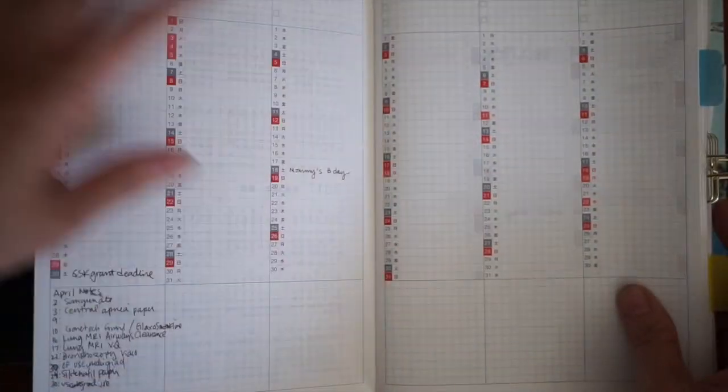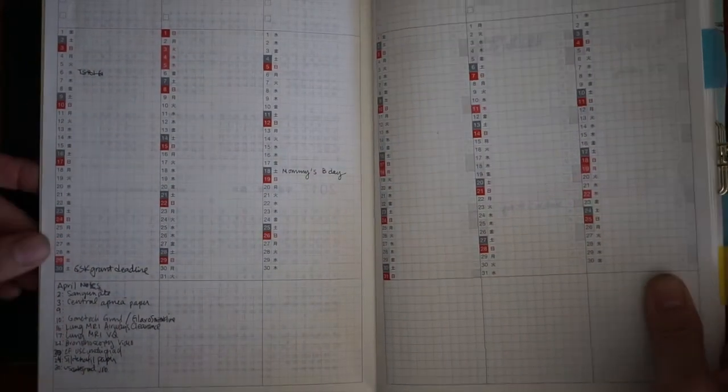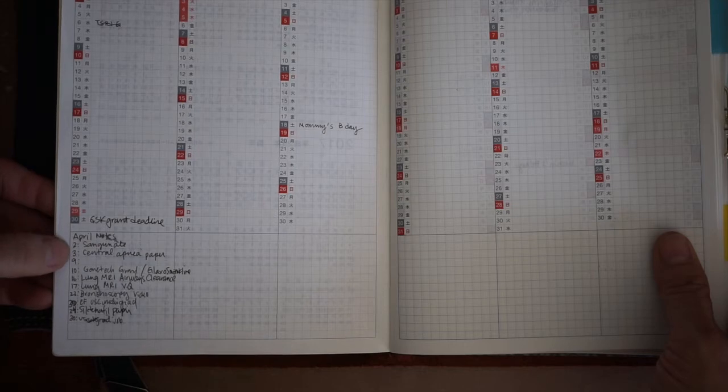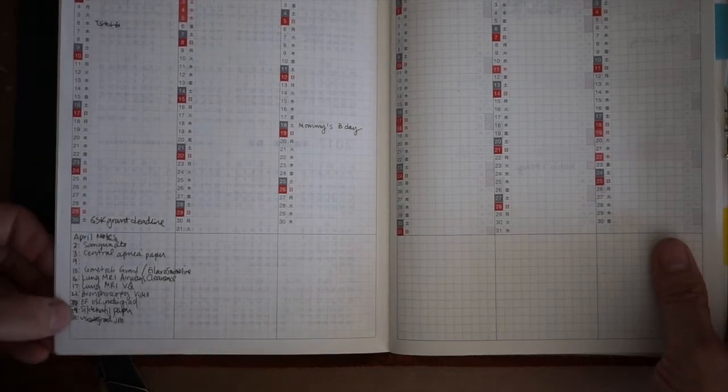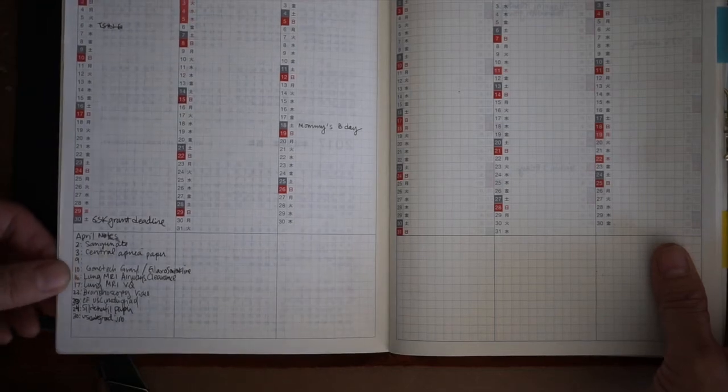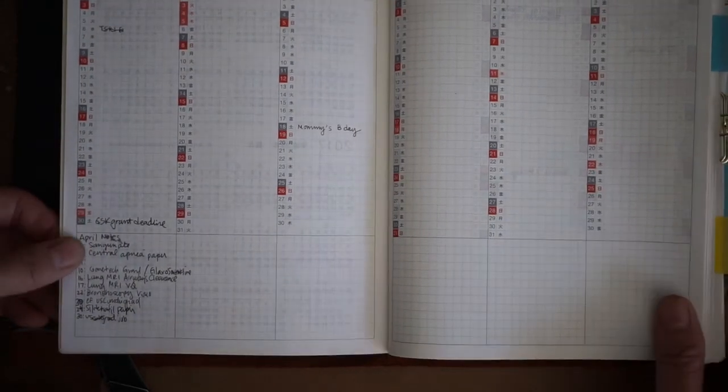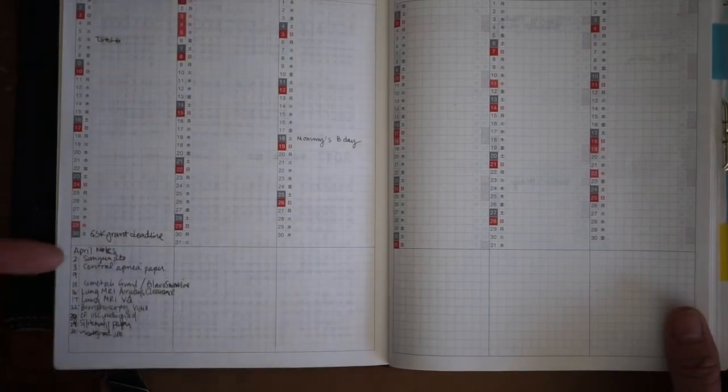And then what I do is when I have specific projects, I've been using the kind of monthly spreads like this. And then here you can see I think I'll put on each of the weekend days what that particular page is about.